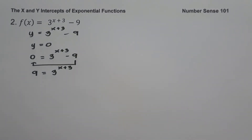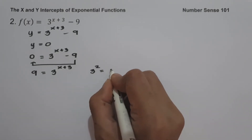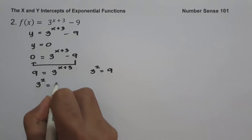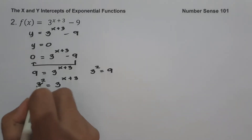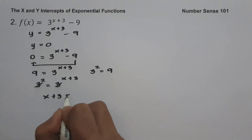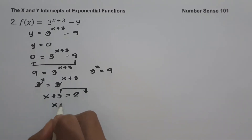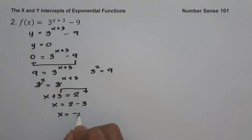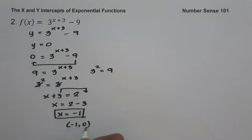To find the value of x, we must have the same base. Let us change 9 as 3 squared, because 3 multiplied by itself is 9. So we have 3 squared equals 3 raised to x plus 3. Since we have the same base, cancel the base and get x plus 3 equals 2. Move 3 to the side of 2, giving x equals 2 minus 3, which is negative 1. Since x is negative 1 and y is 0, our x-intercept is (-1, 0).